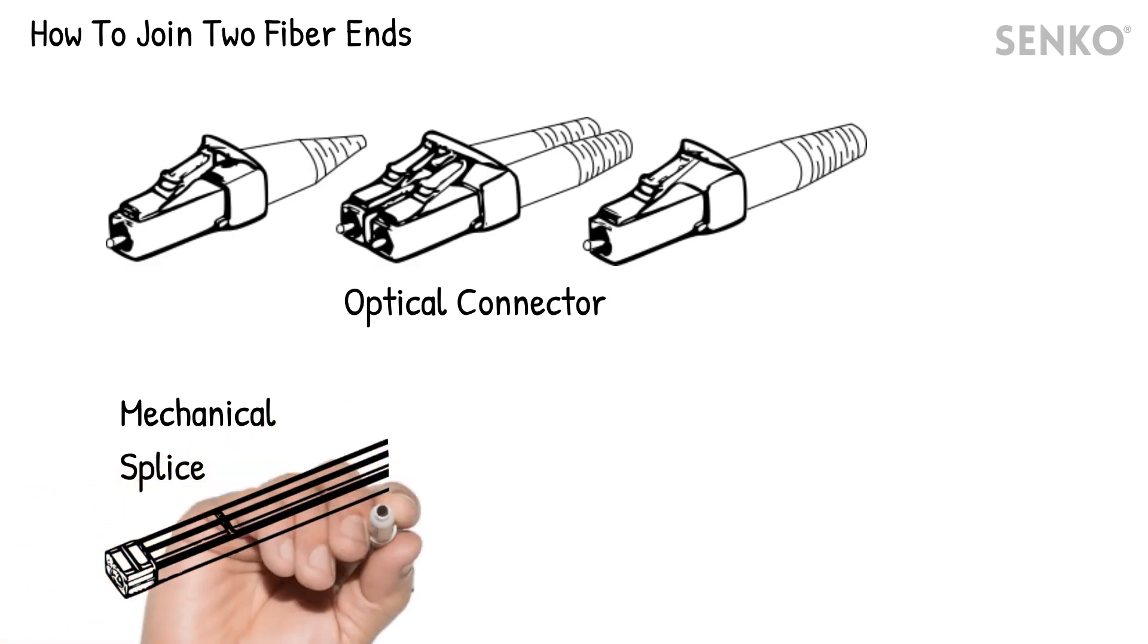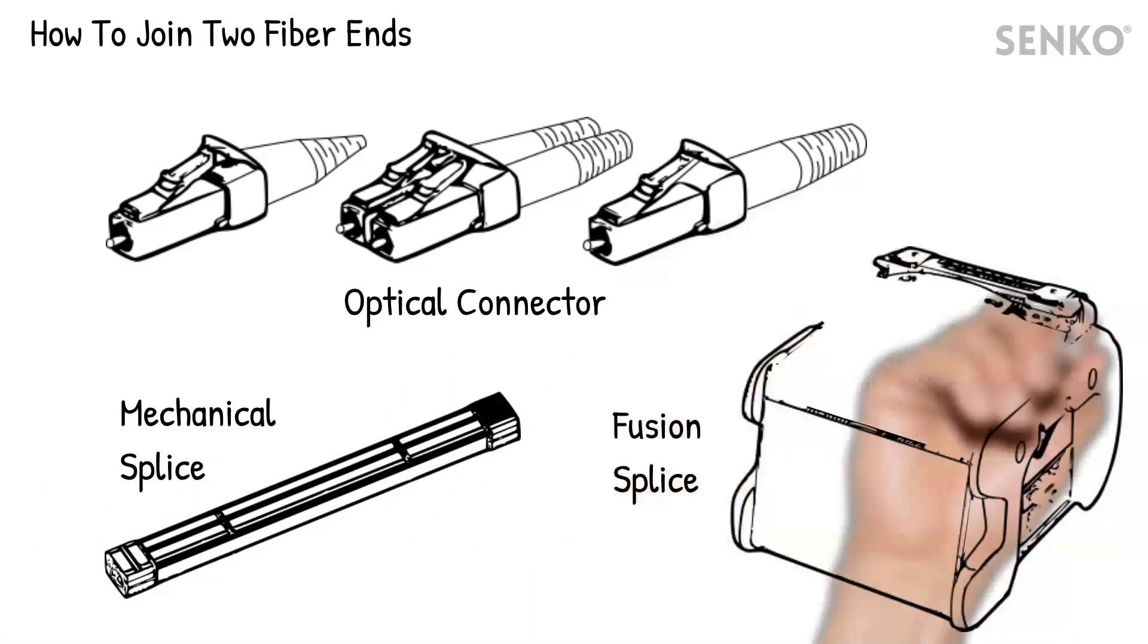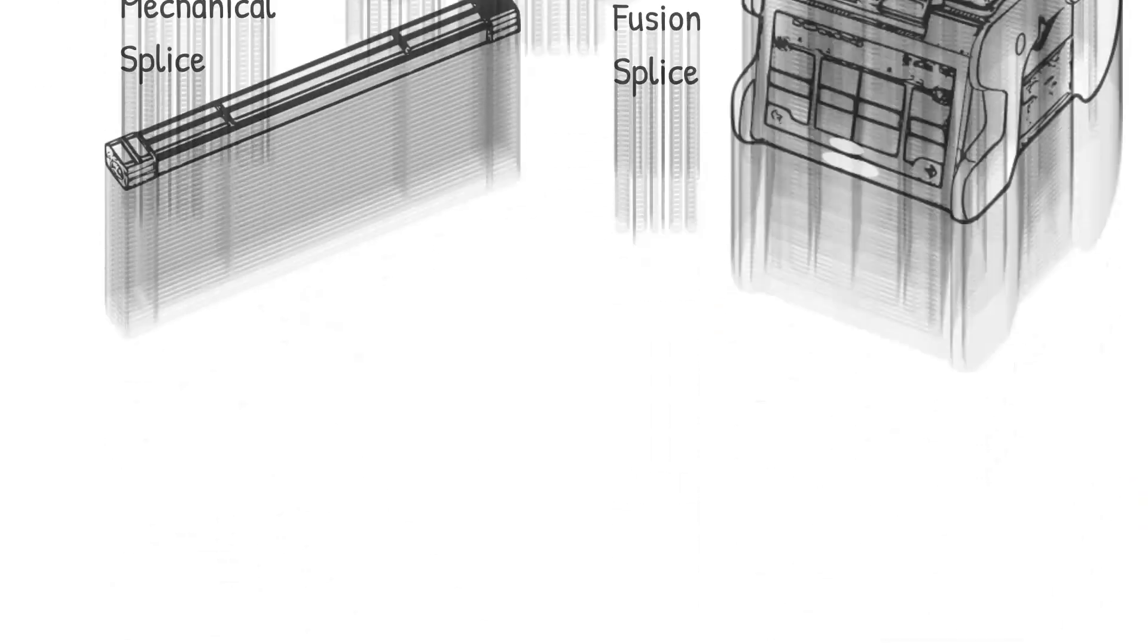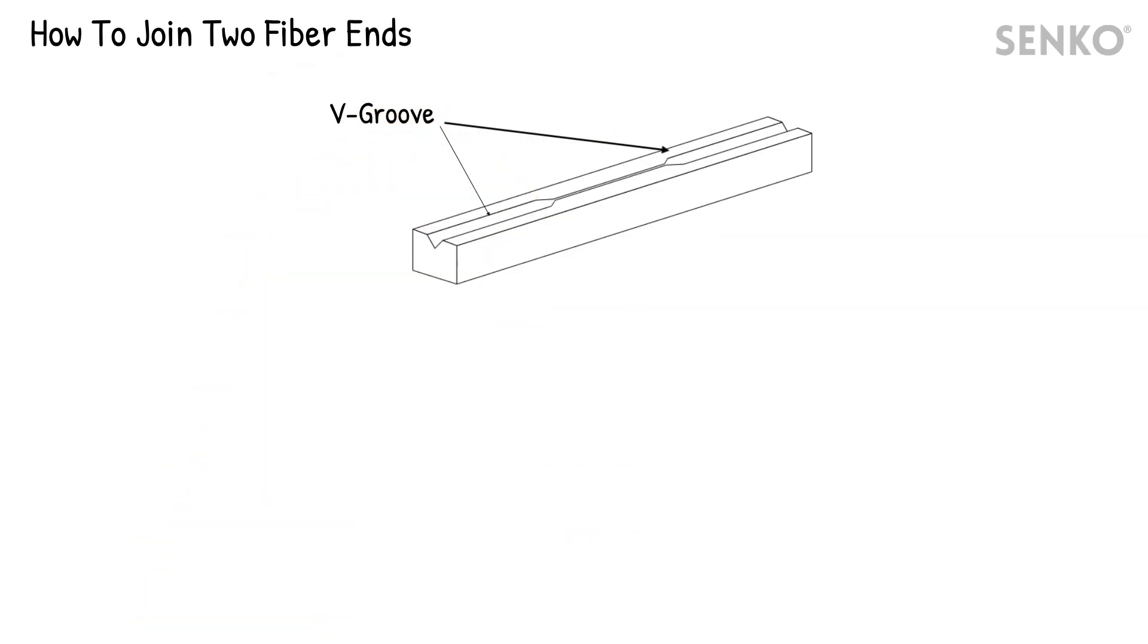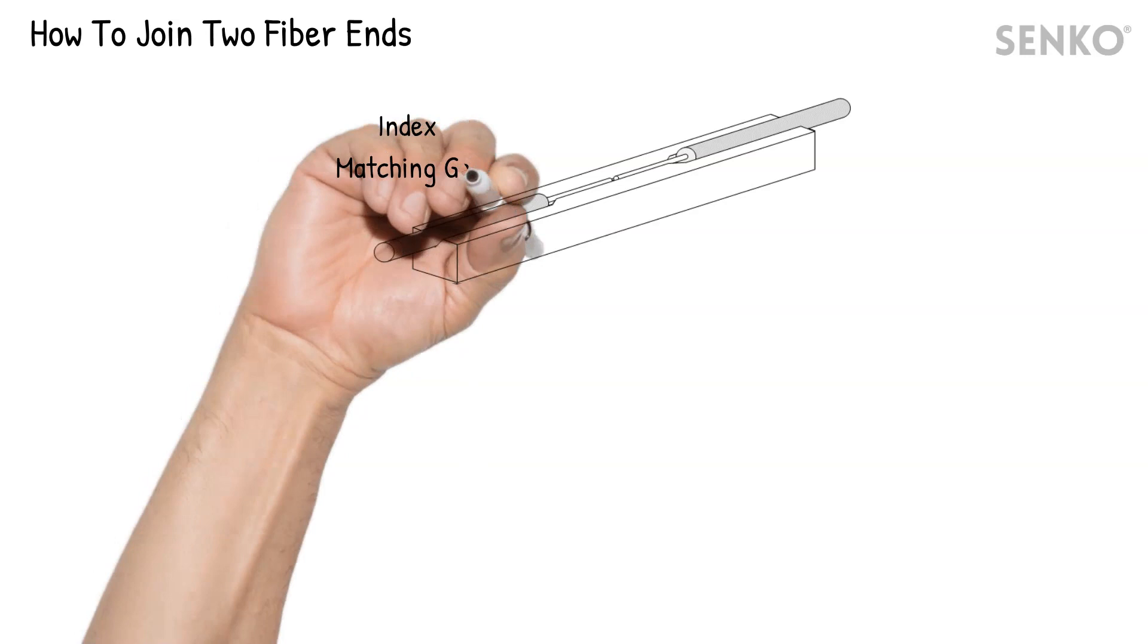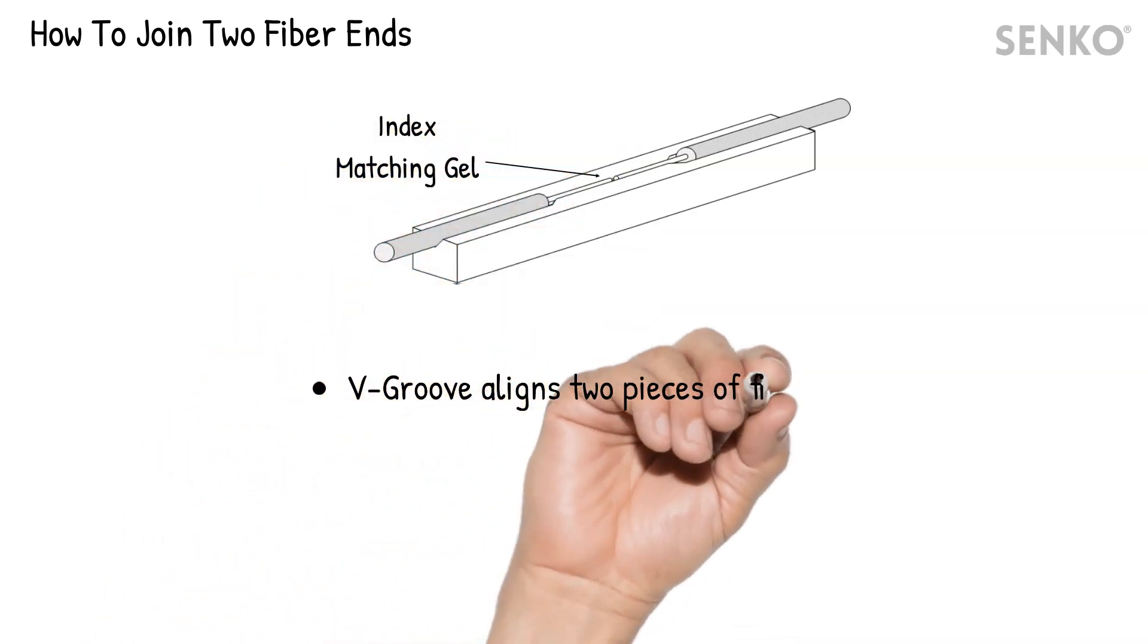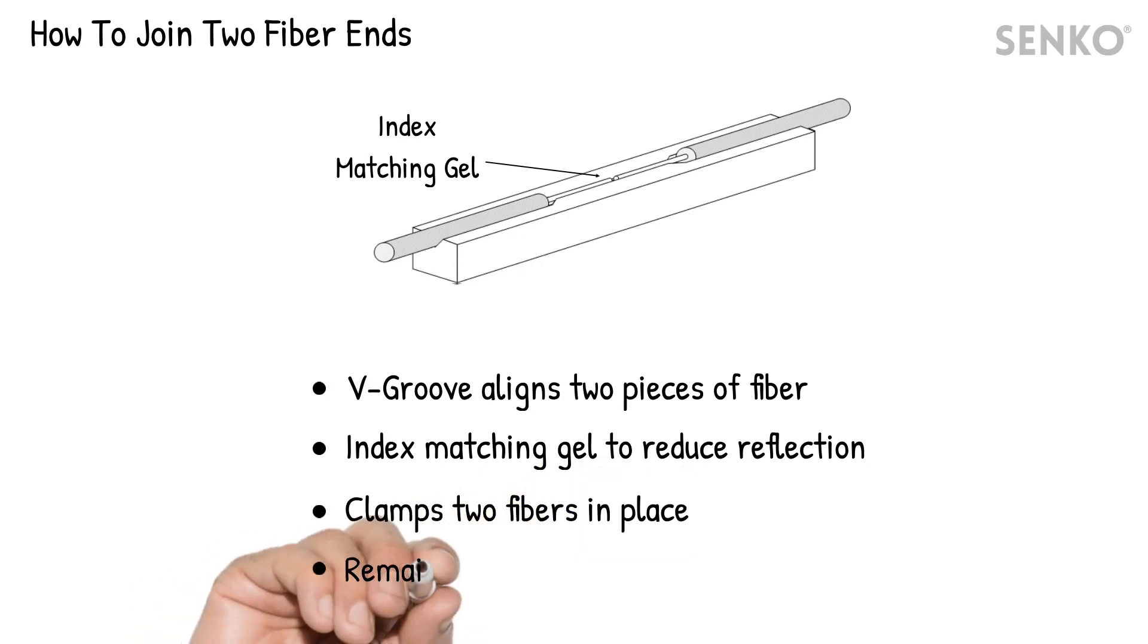There are mainly two splicing methods, which are the mechanical splice and the fusion splice. Mechanical splice is done by using a sleeve with V-grooves. Two optical fiber ends are butted together with index matching gel to reduce reflection. The fibers are then clamped in position, but they remain as two separate fibers.